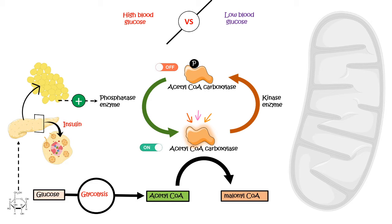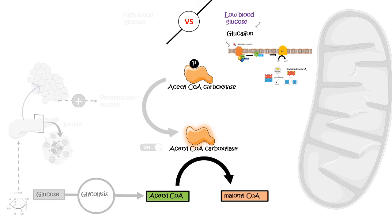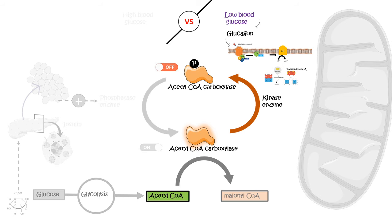In the fasted state, glucose levels are very low and insulin levels are low, but glucagon levels are high. Glucagon binds to glucagon receptors in target tissue, ultimately leading to protein kinase A activation. Protein kinase A then phosphorylates acetyl-CoA carboxylase into its deactivated state. As a result, the conversion of acetyl-CoA to malonyl-CoA does not take place, and acetyl-CoA cannot be used to generate fatty acids.